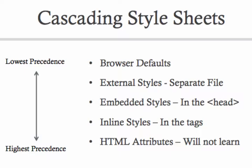We can override the browser defaults with an external style sheet, which is stored in a separate file and linked into our page. External style sheets are really useful because we can have the same style linked into multiple pages. The next highest precedence is embedded styles, which are located in the head section of our page. Then inline styles are the next highest precedence, and they're stored in attributes on the tags themselves. Finally, we have HTML attributes.